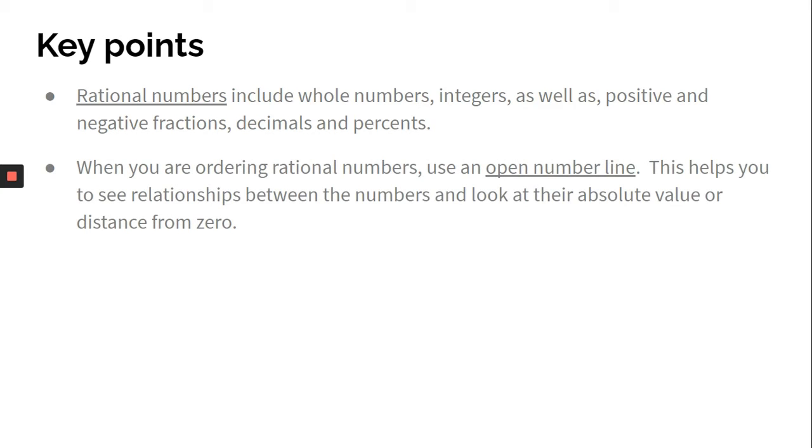When you're ordering rational numbers, use an open number line. This helps you to see relationships between the numbers and look at their absolute value or distance from zero.